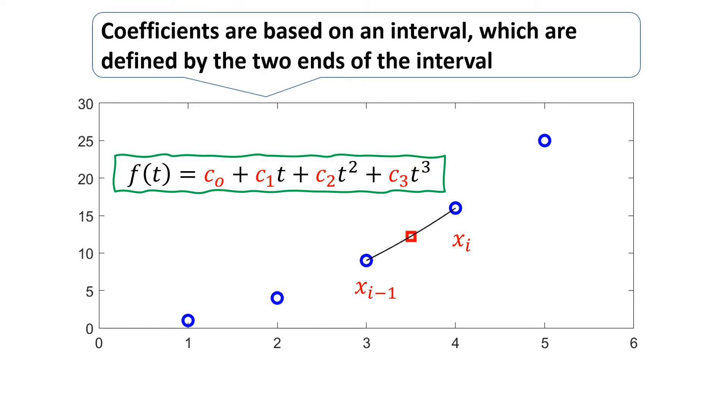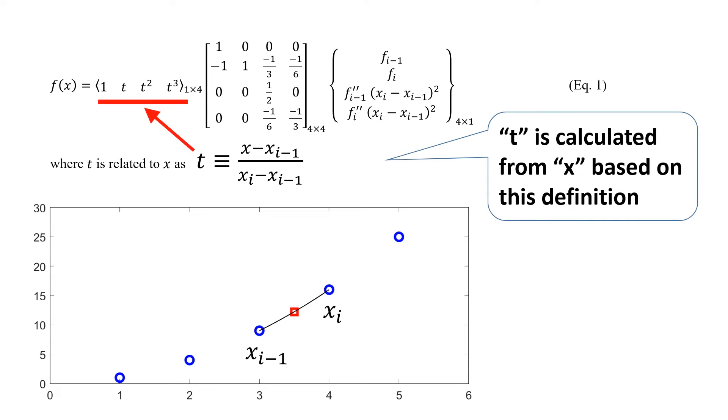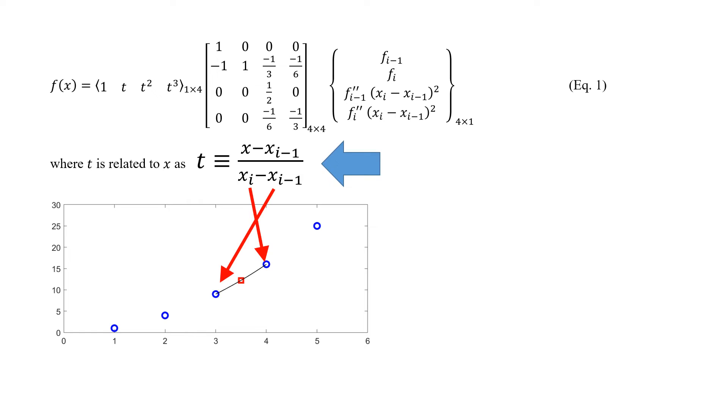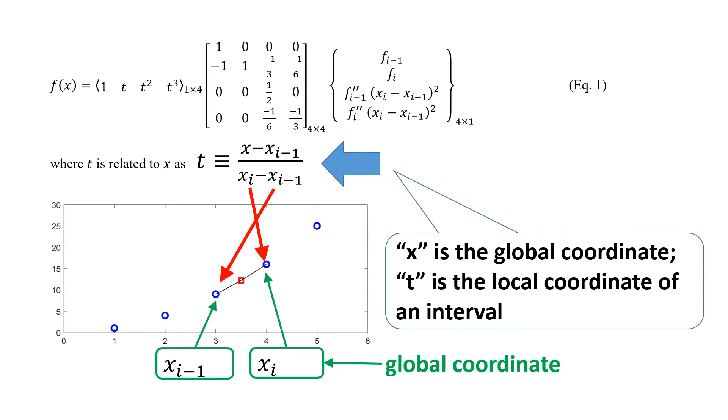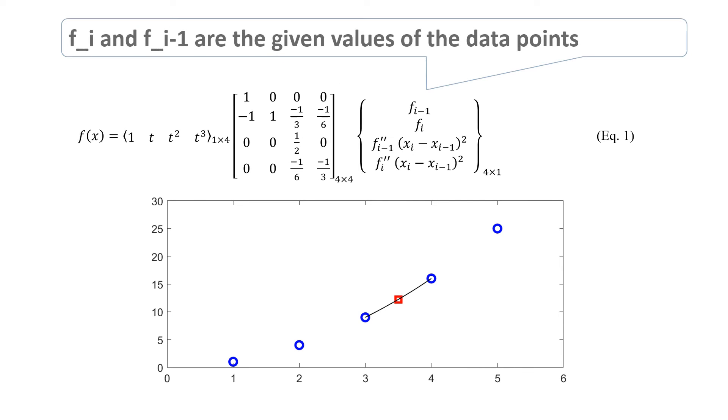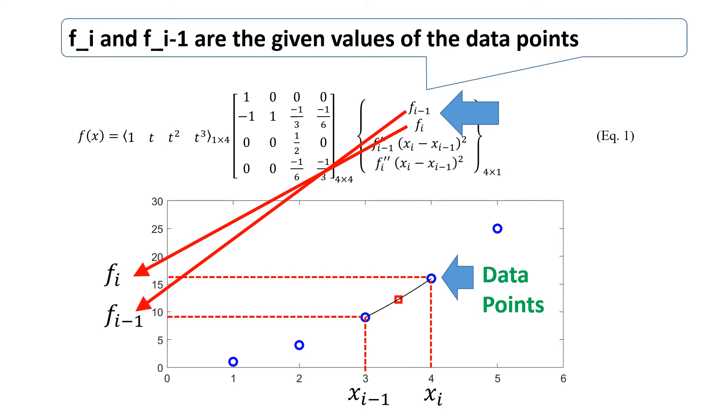Coefficients are based on an interval, which are defined by the two ends of the interval. T is calculated from x based on this definition. x is the global coordinate. T is the local coordinate of an interval. F_i-1 and f_i are the given values of the data points.